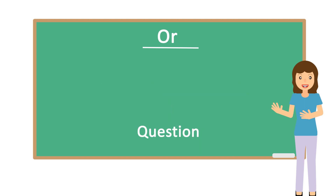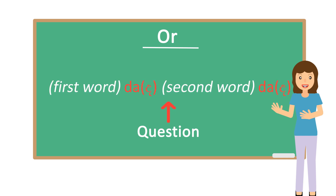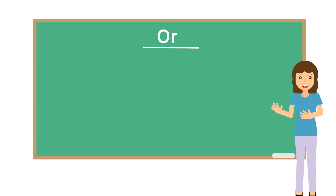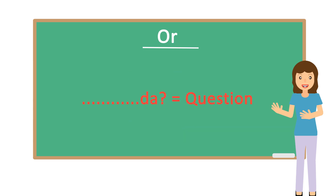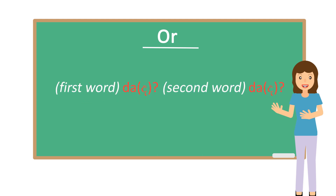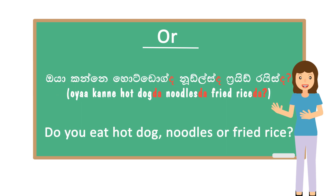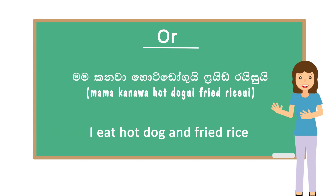If it's a question, you have to add DHA after all the words that connect with OR. As an example, if you want to ask 'you or me?' you say 'OYA DHA, MAMA DHA.' You have to add DHA at the end of each word. Normally we add DHA at the end to make it a question, so the same concept applies here. For example: 'OYA KANNI HOT DOG DE, NOJUS DE, FRIED RICE DE' or 'MAMA KANNI HOT DOG DE, FRIED RICE DE.'